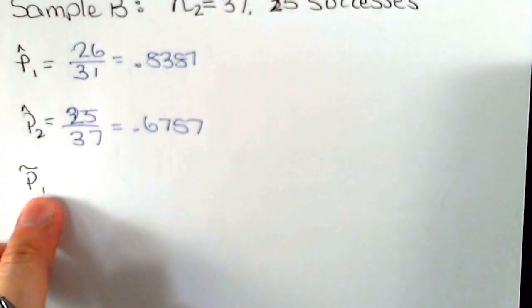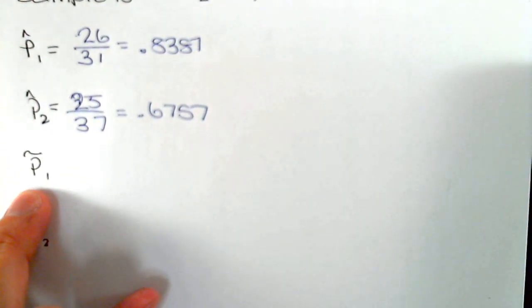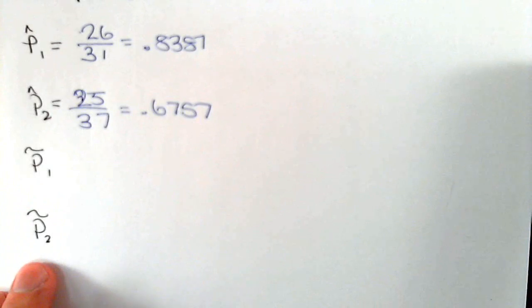Next we're asked to find p̃₁, which is the plus 4 proportion for the first sample, and then for the second.